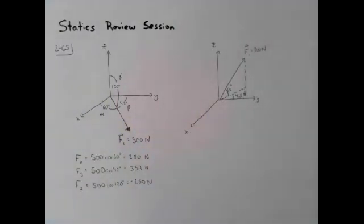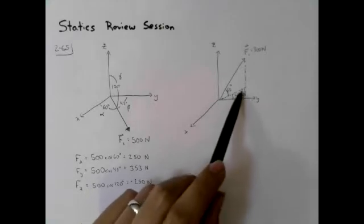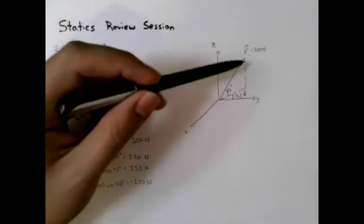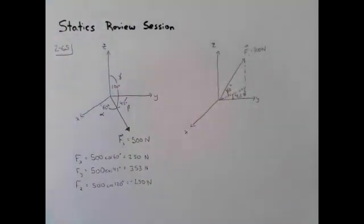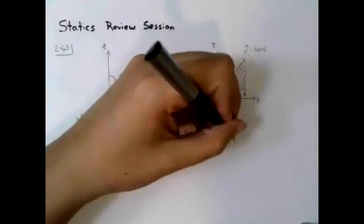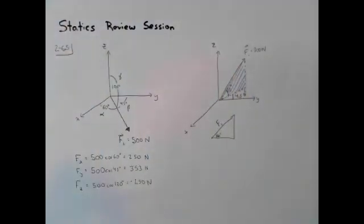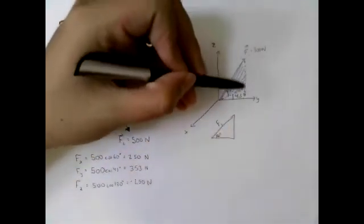Now we're going to go to the more complicated one. In the second drawing, we're not given angles from each axis. Instead we're given one angle between the axis and the projection of the vector, and then we're given another angle between the projection of the vector and the actual vector. What I have is a right triangle with an angle of 60 where my hypotenuse is my F1. What would this vertical component be? Z. Fz. What about this component? F of xy.